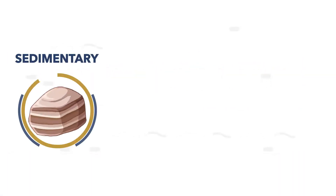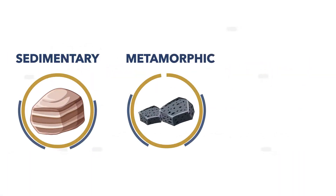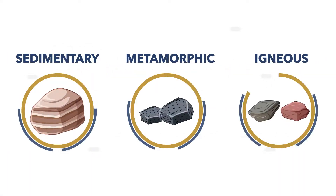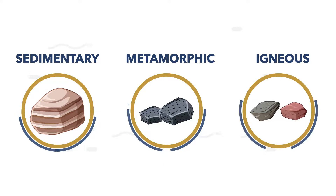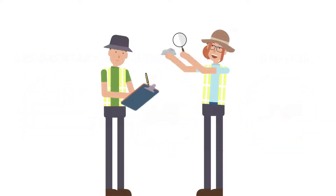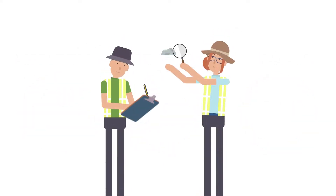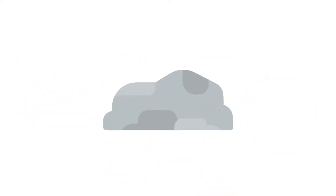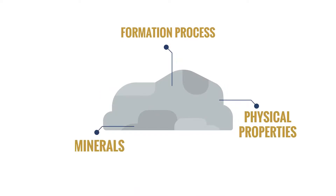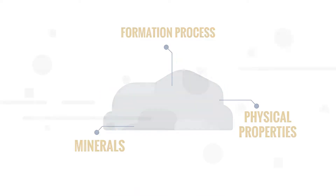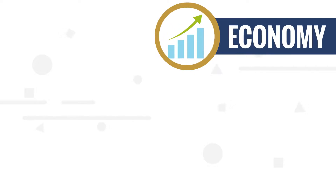The three main types of rock are sedimentary, metamorphic, and igneous, and are defined by their formation process. Geologists identify rocks based on the formation process, their physical properties, and what minerals they contain.